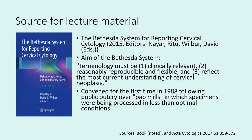The source for the lecture material, unless otherwise noted, is the Bethesda System for Reporting Cervical Cytology. The aim of the Bethesda System was to be clinically relevant, reasonably reproducible, and flexible, and reflect the most current understanding of cervical neoplasia. It was convened for the first time in 1988 following public outcry over so-called pap mills, which were processing specimens in less than optimal conditions with non-reproducible findings, and patients were not having good outcomes.